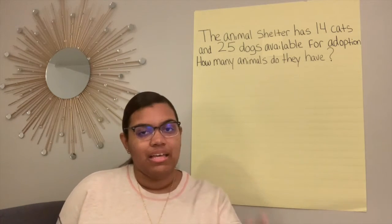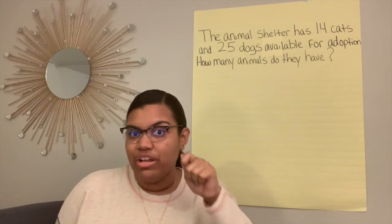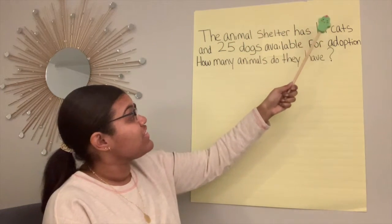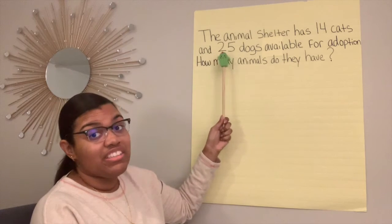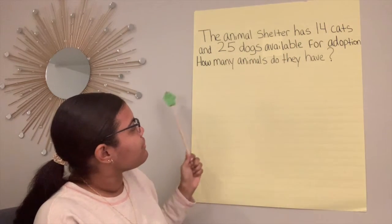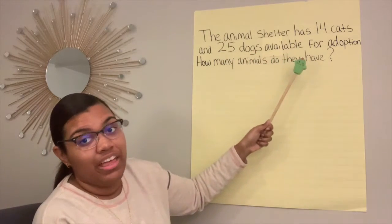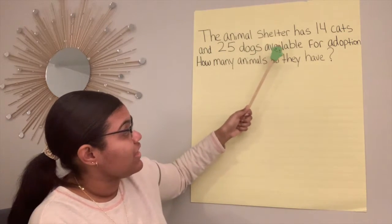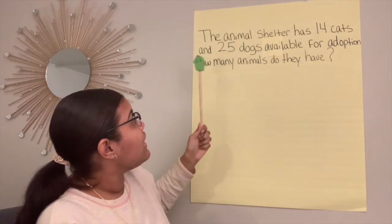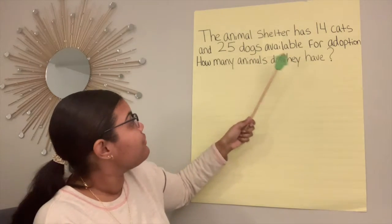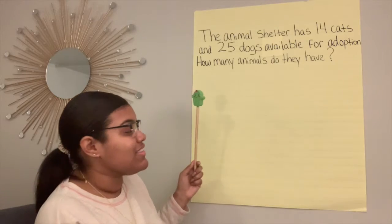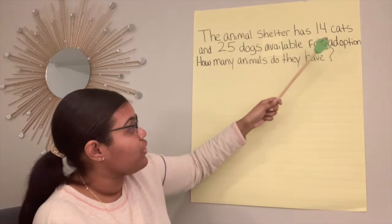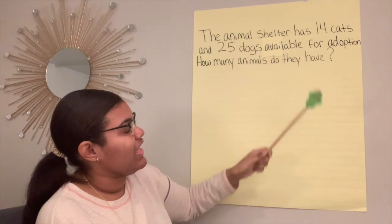I'm going to read it to you guys three times, so your magnifying glasses have to be up and ready to go. The animal shelter has 14 cats and 25 dogs available for adoption. How many animals do they have? The animal shelter has 14 cats and 25 dogs available for adoption. How many animals do they have? Last time I'm reading it — get those magnifying glasses up. The animal shelter has 14 cats and 25 dogs available for adoption. How many animals do they have?